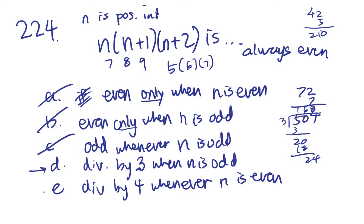E says divisible by 4 whenever N is even. If N is 2, we get 2 times 3 times 4, which is 24 — definitely divisible by 4, so E might also be right. Going back to re-read: D says divisible by 3 only when N is odd. That word 'only' makes a big difference.